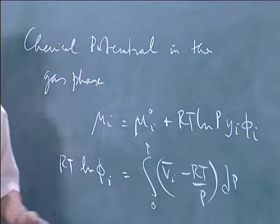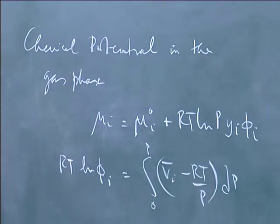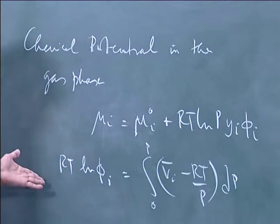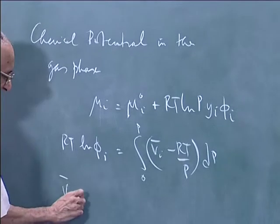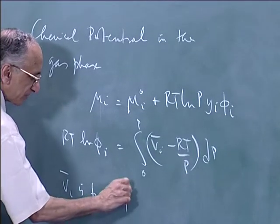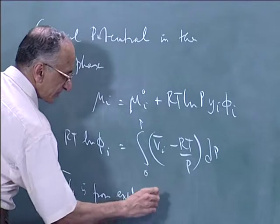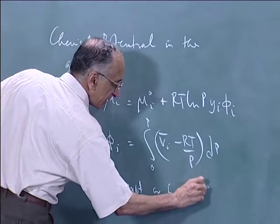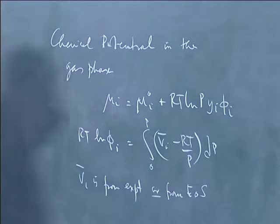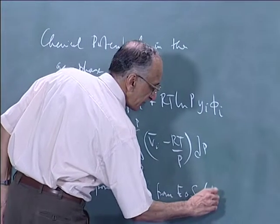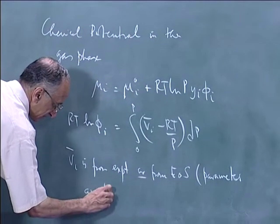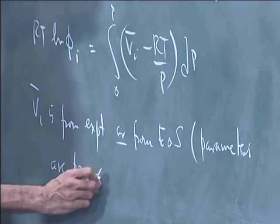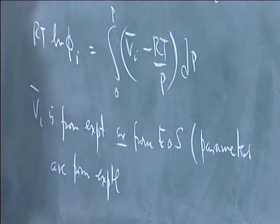You will get absurd answers if you use millimeters of mercury. Sometimes the data is given in that form, and you will get 760 times the answers that you should get. We are computing v_i_bar, which comes from experiment, or from an equation of state in which parameters are obtained from fit of experimental data.